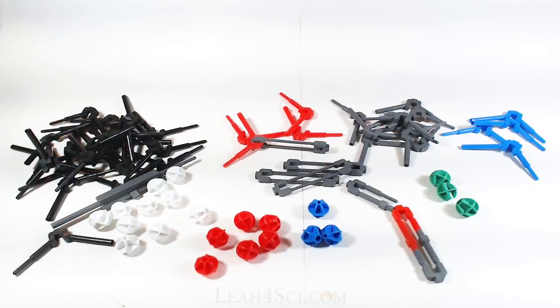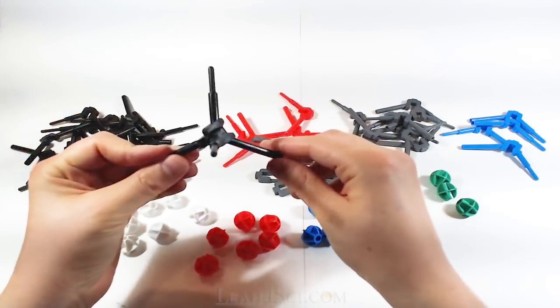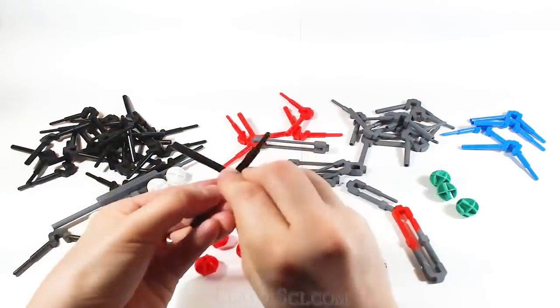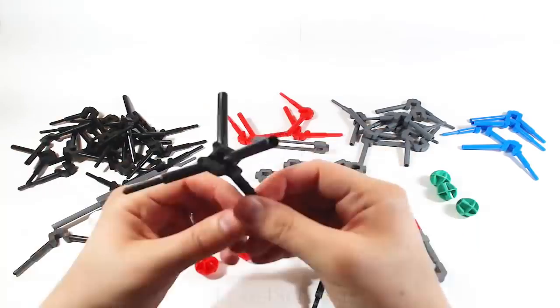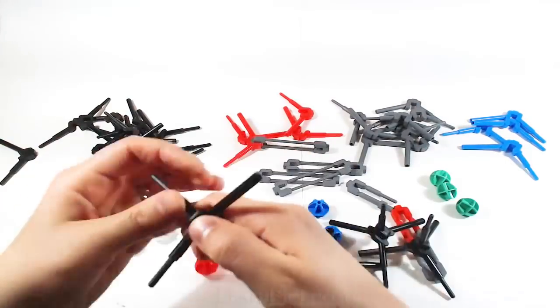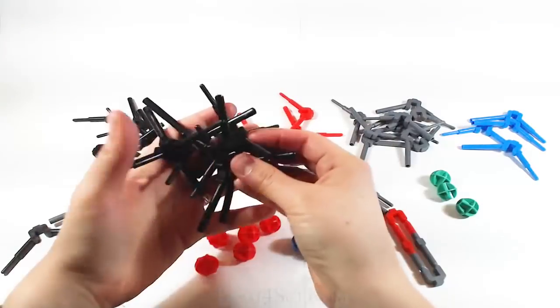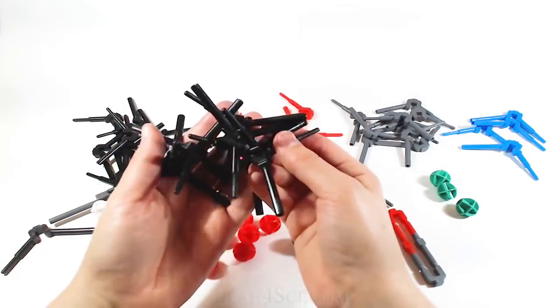So now that we have the kit, what are the main structures that you're going to see in your organic chemistry course? Obviously, we have the sp3 carbon. So we want to build up a couple of these. And I recommend actually keeping a few of these pre-built, so that you have them handy no matter what type of structure you're trying to create.